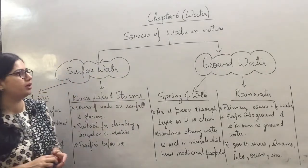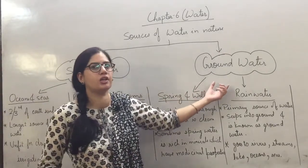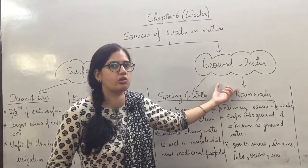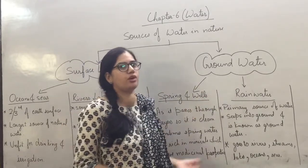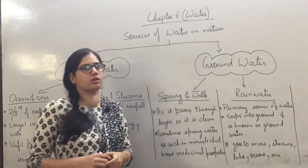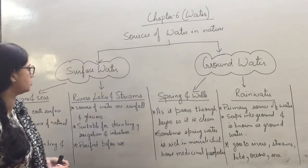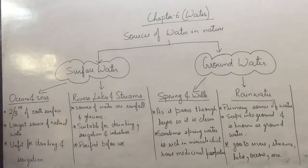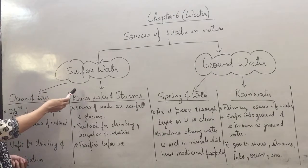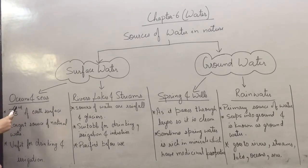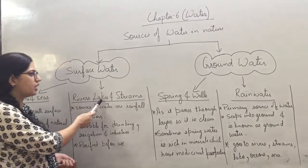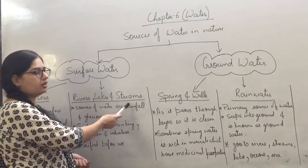Some amount of water is also present below the soil, and that water is known as ground water. Now, surface water is present in 2 forms: either in the form of oceans and seas, or in the form of rivers, lakes and streams.